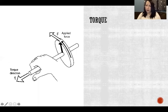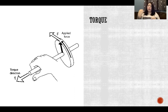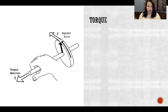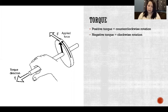When defining a positive or negative torque in the body, the direction of the torque depends on which direction the joint is rotating. Positive torque is counterclockwise rotation and negative torque is clockwise rotation.